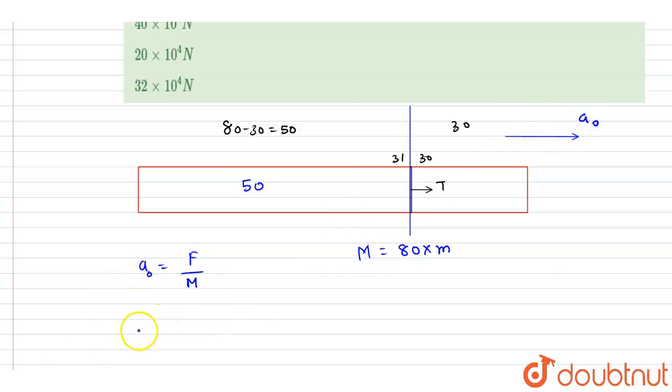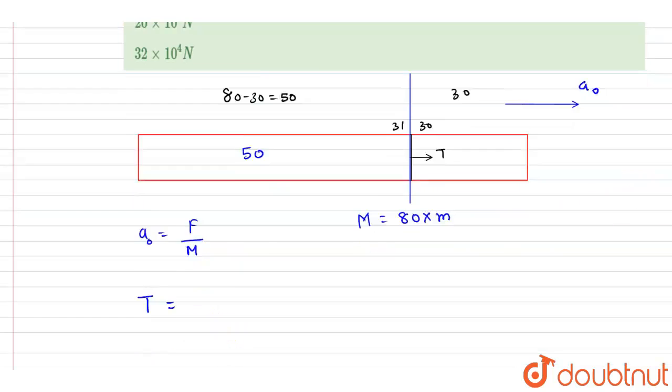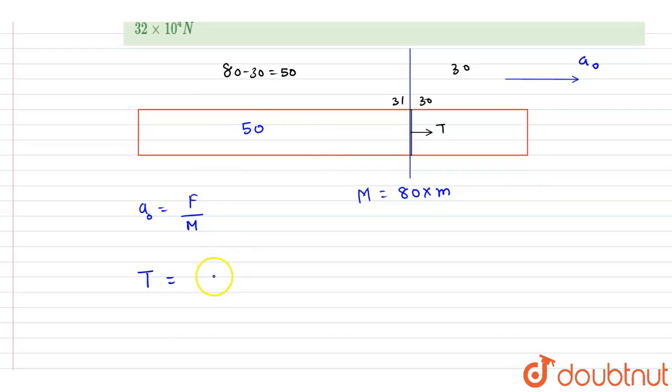So I will write down the tension force is equal to mass of this 50 wagons into the acceleration. So mass of this 50 wagons will be 50M into acceleration A naught. Mass times acceleration.